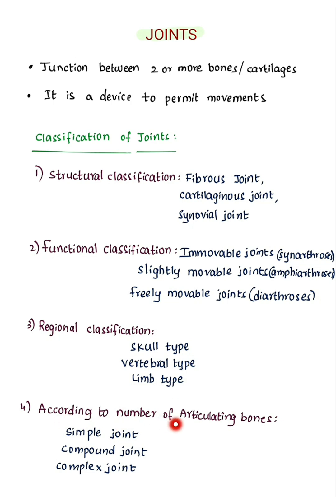According to the number of articulating bones, joints are classified as simple, compound, or complex. A simple joint involves only two bones articulating — example: interphalangeal joints.